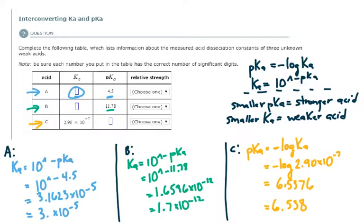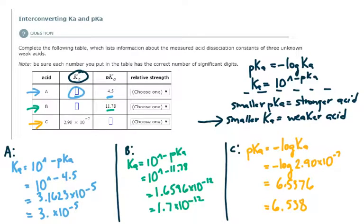The last thing we need to do is rate these acids by relative strength. The easiest way is to look at the Ka values. The smaller the Ka value, the weaker the acid. If the Ka value is really small — meaning it has a large negative power in scientific notation — then equilibrium lies very far to the left, hardly any products form, the acid barely ionizes, and it is a very weak acid.